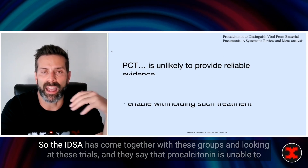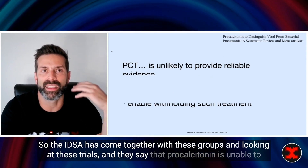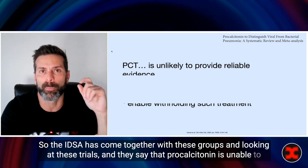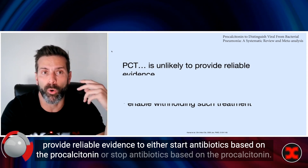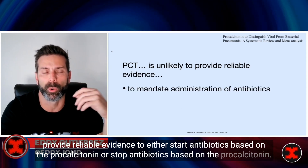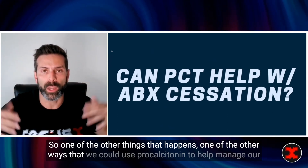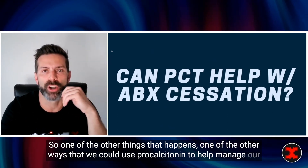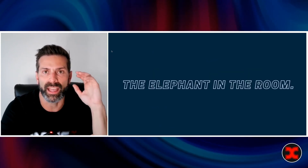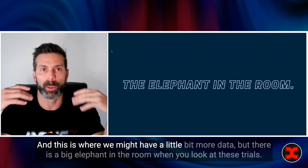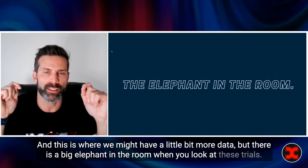The IDSA has come together with these groups, looked at these trials, and they say that procalcitonin is unable to provide reliable evidence to either start antibiotics or stop antibiotics based on the procalcitonin level. One of the other ways we could use procalcitonin is to figure out if it helps with antibiotic cessation, and this is where we might have a little more data — but there is a big elephant in the room when you look at these trials.